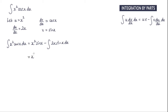So I have x squared sin x minus — I'm going to bring this 2 outside the integral — so I've got 2 and the integral of x sin x dx. And if you notice, we have another occasion where we'll need to use integration by parts.